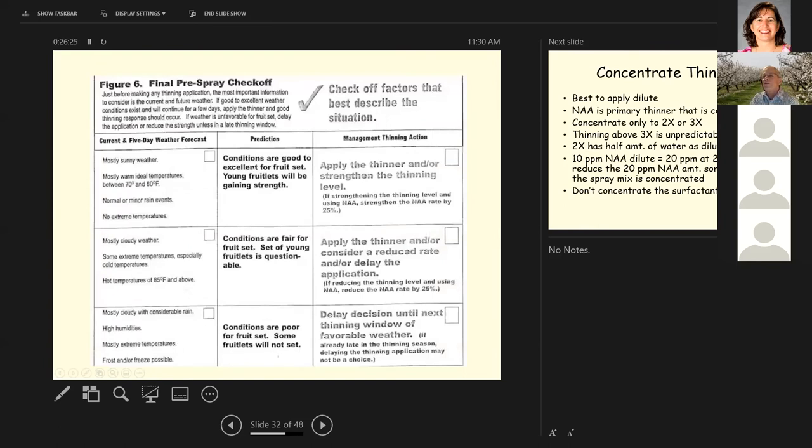And here's your final pre spray check off. Looking at the weather conditions. If you've got mostly sunny weather, mostly warm, ideal growing conditions between 70 and 80 degrees Fahrenheit, normal or minor rain events, no extreme temperatures, conditions are good to excellent for fruit set. Young fruitlets will be gaining strength. So you want to apply your thinner and or strengthen the thinning level.